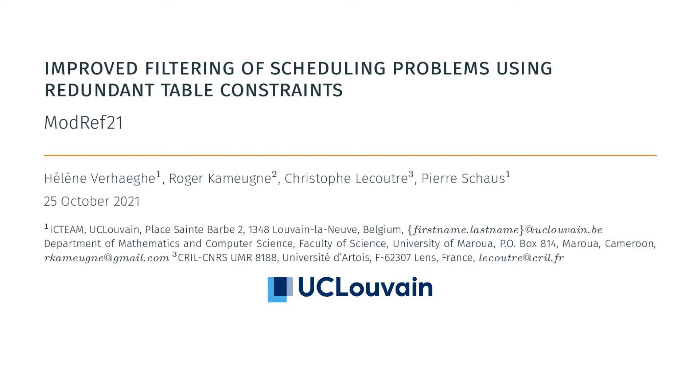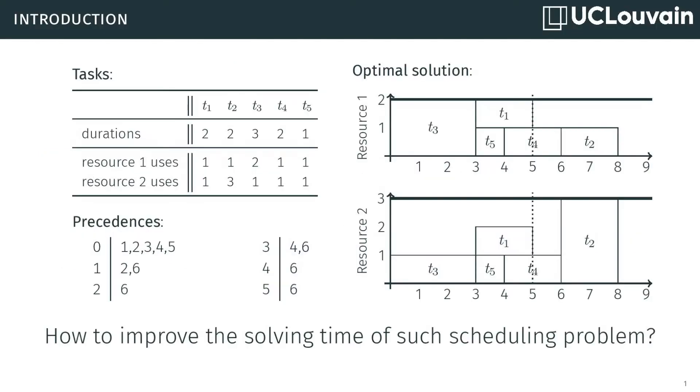Hi everyone, I'm going to present our work about an improved filtering of scheduling problems using redundant table constraints. The success of constraint programming on scheduling problems comes from the use of global constraints. A particularity of scheduling problems is the need for variables with big domains due to the discretization of time required to make a schedule.